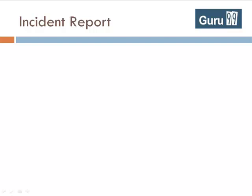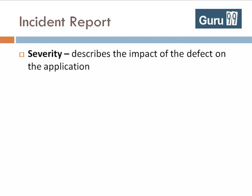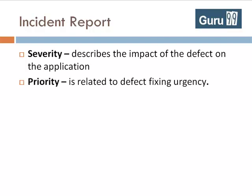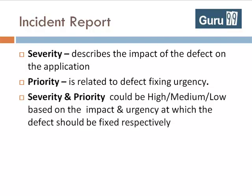This apart, your bug report will also include severity, which describes the impact of the defect on the application, and priority, which is related to defect fixing urgency. Severity and priority could be high, medium, or low, based on the impact and urgency at which the defect should be fixed respectively.